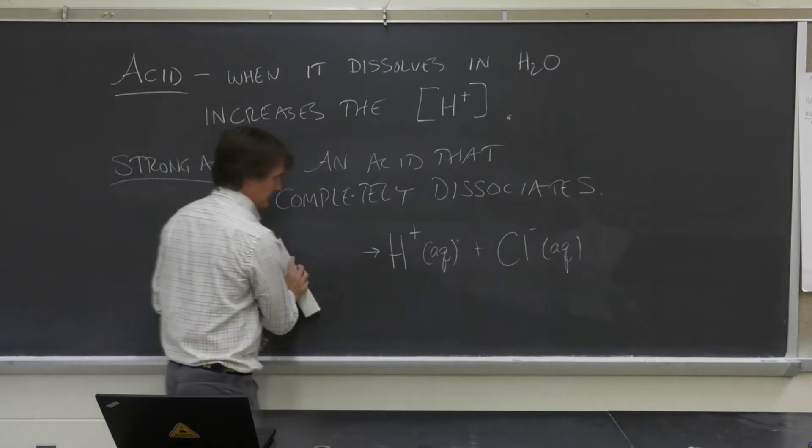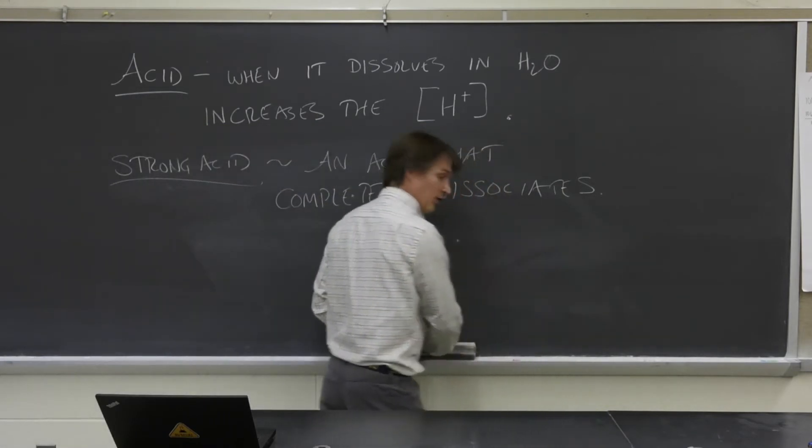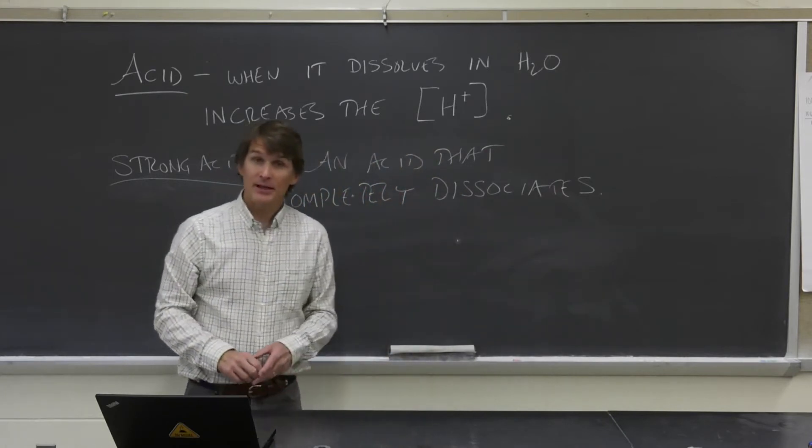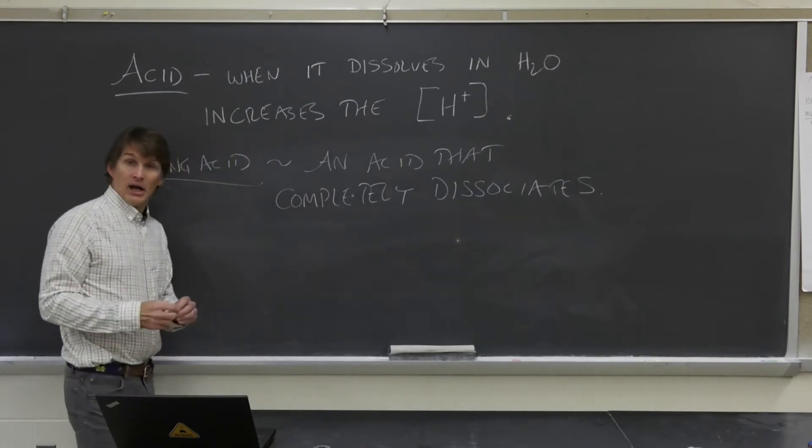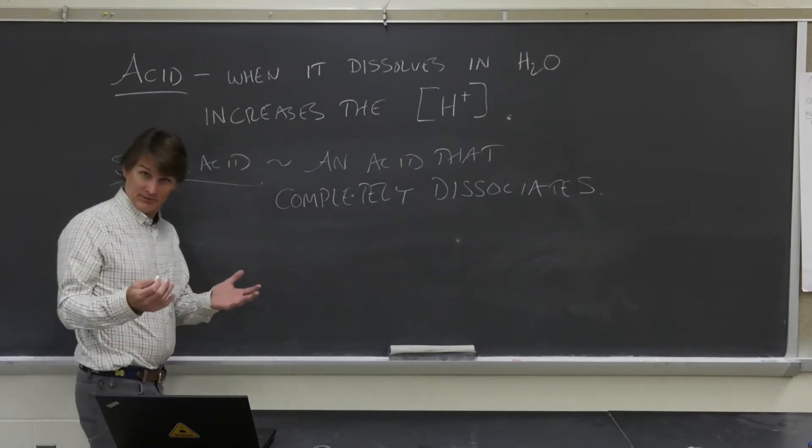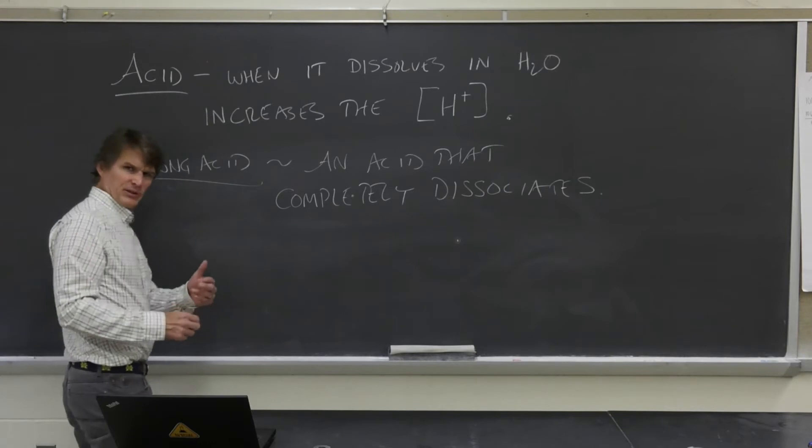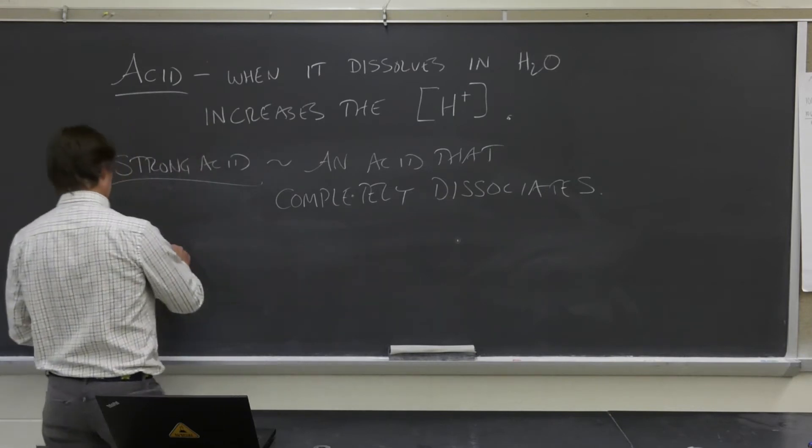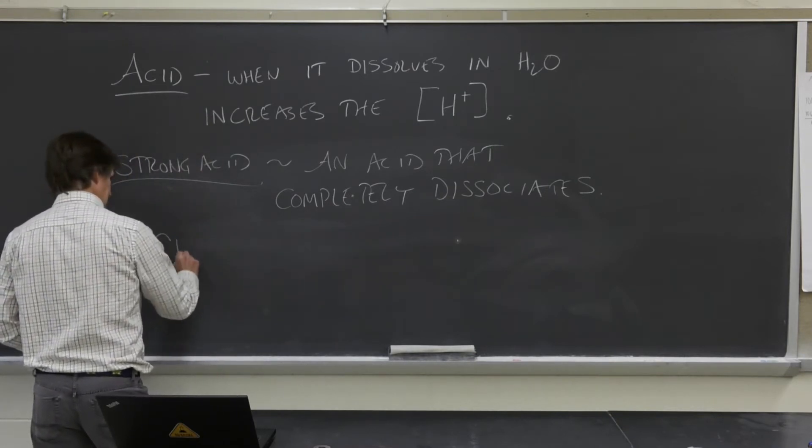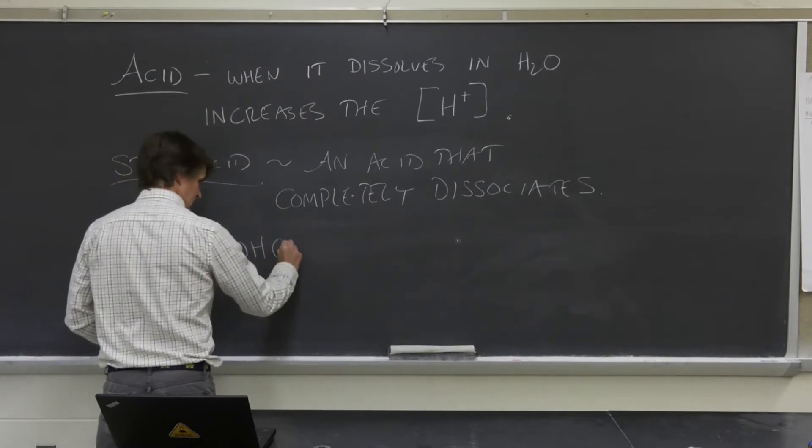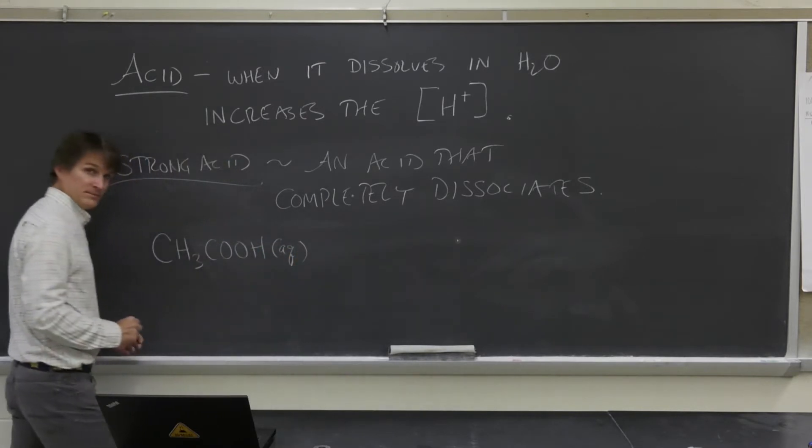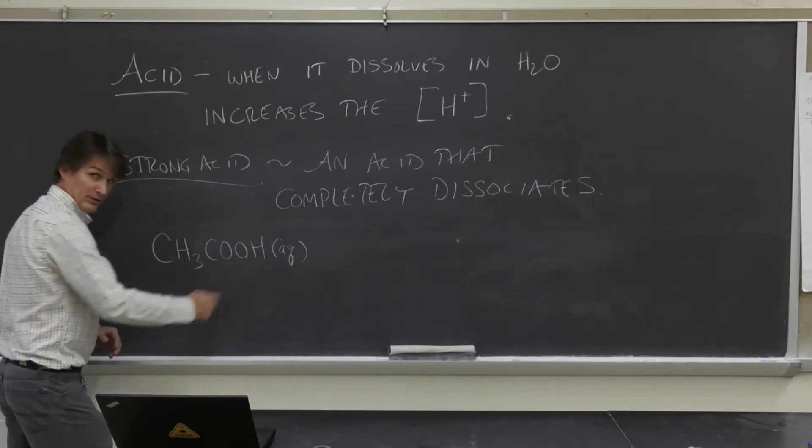There are some other acids that are not strong acids. We call them weak acids. These are acids that don't completely dissociate when they dissolve in water. Acetic acid, that's what's in vinegar. Vinegar is like 5% acetic acid. The formula for that is CH3COOH. When this dissolves in water, that's what that AQ means, remember.